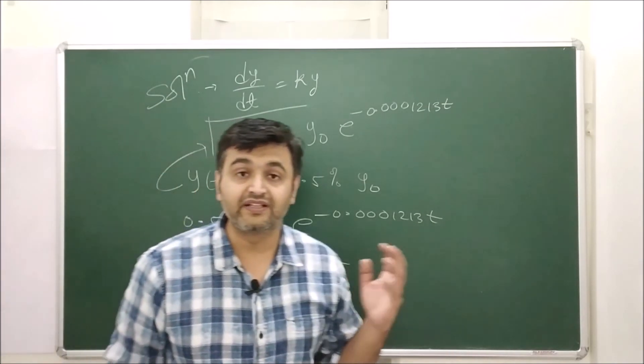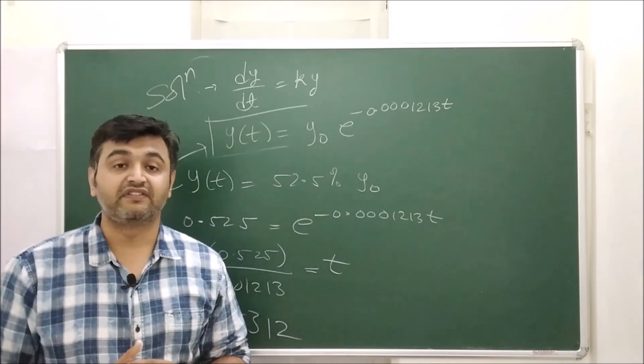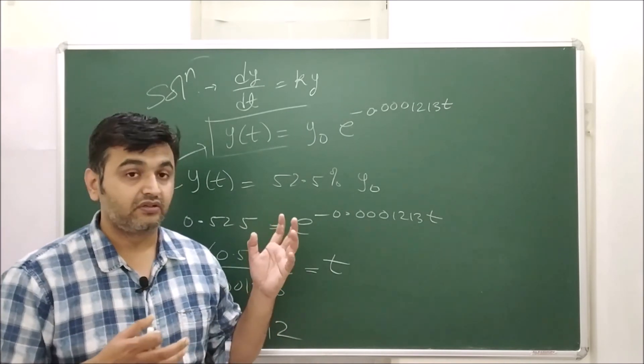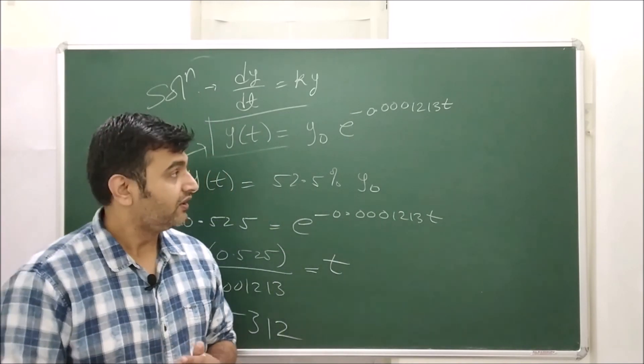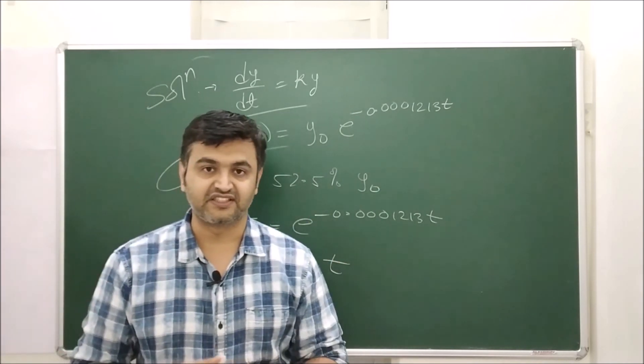Therefore the mummy died around 5,000 years ago. So that's how one can use differential equations to find the death period or the decay of radioactive substances and all those stuff. I hope this example is clear. If you have any doubt, you can ask me in the comment section. Thank you.